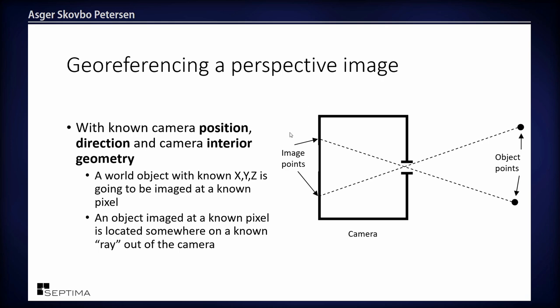Going the other way: if you have a pixel — say you put your mouse cursor somewhere in the image and want to know what's at that point — you can work backwards. But you only get the ray; you don't know where along that ray the object is positioned. You have to intersect it with something else: a terrain model, a 3D model, a city model, or another ray from another perspective image to get the XYZ location.